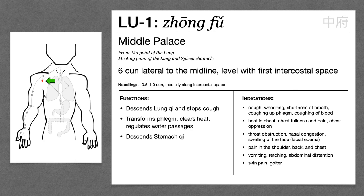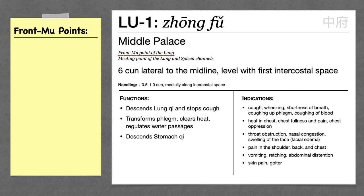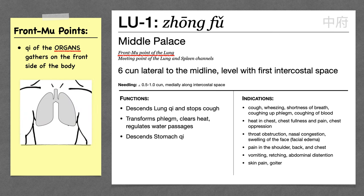Lung 1 is also the front mu point of the lung. Front mu points are where the qi of the organs gathers on the front of the body. So Lung 1 acts primarily on the lung organ and not necessarily the lung channel.